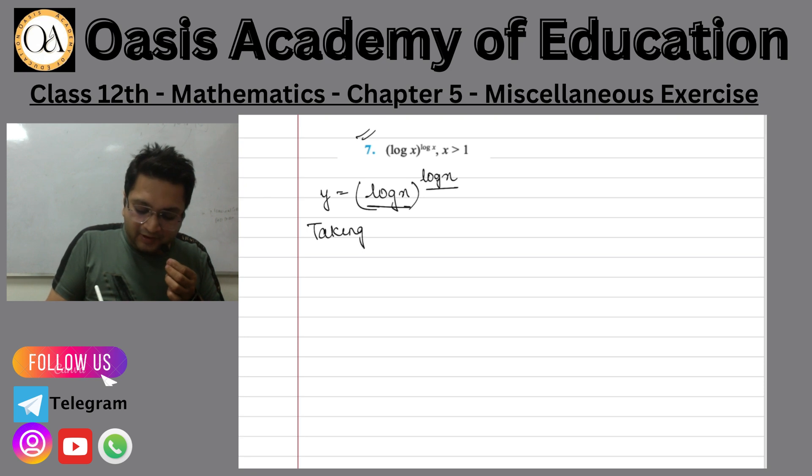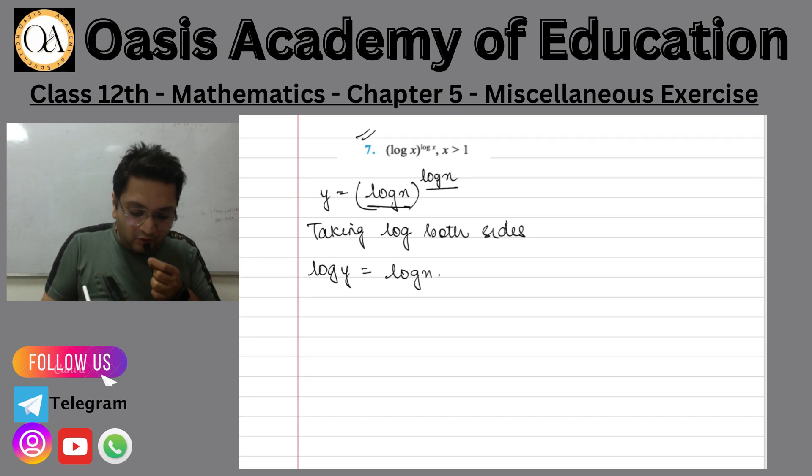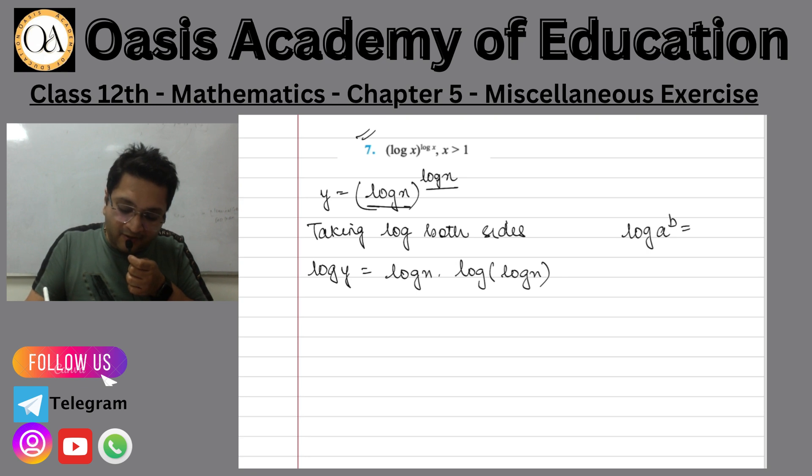So we will say taking log both sides. Taking log both sides, we will get log y is equal to log x into log log x. Look, I have added a property directly here: log a power b is equal to b log a. I have written directly here.